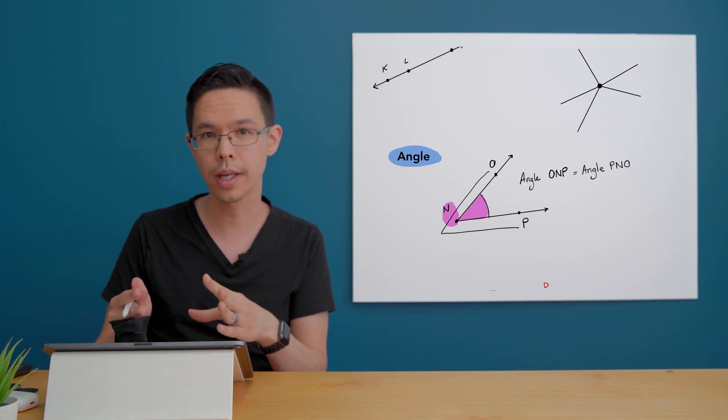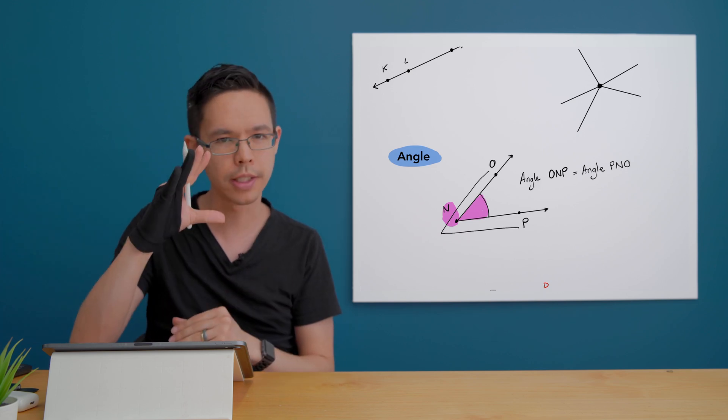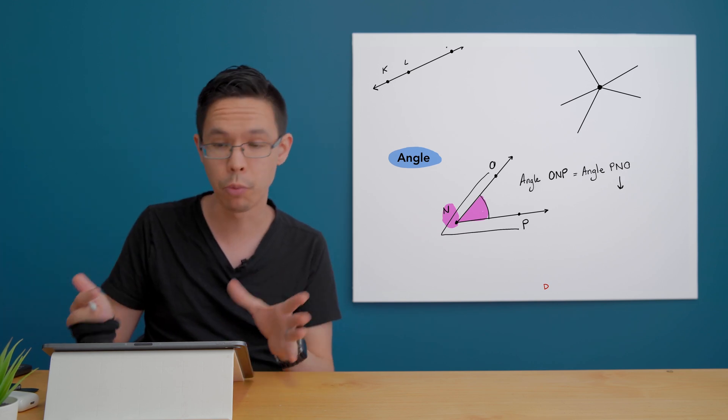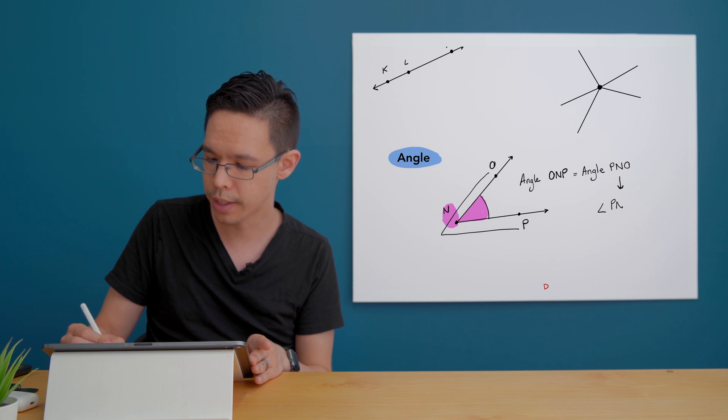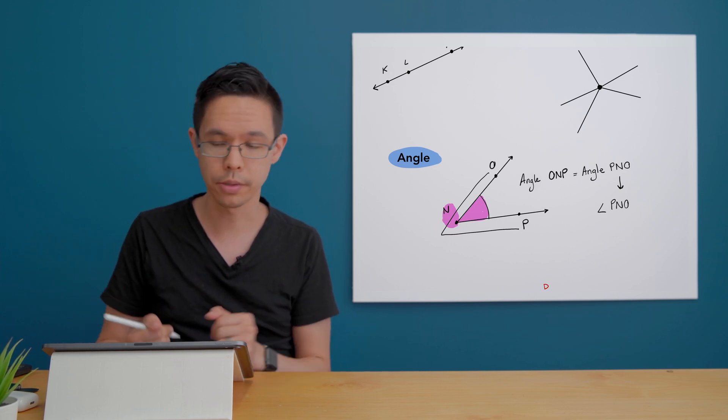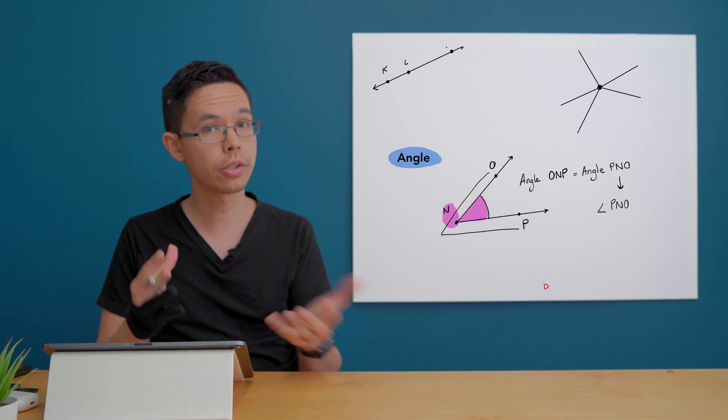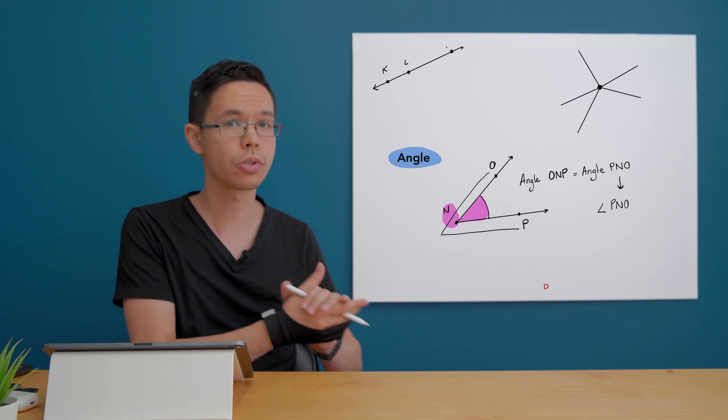There is an icon for angles and I'll show you now. So we can rewrite that one as the angle PNO and that's also fine. So just so you know that we have those options to refer to an angle.